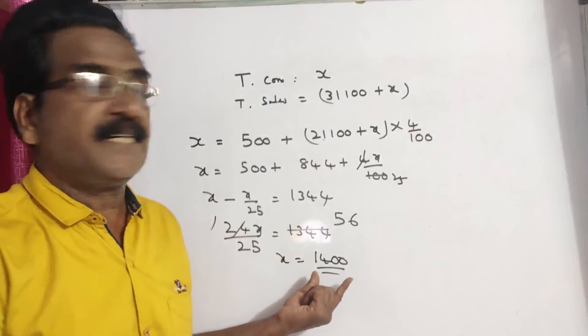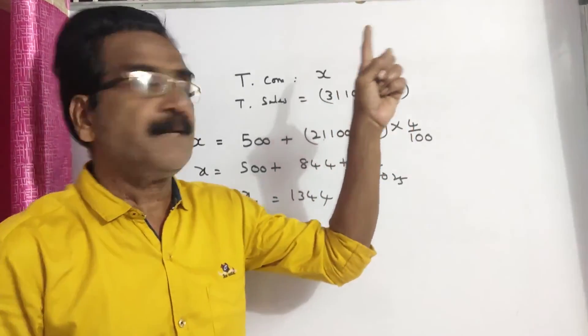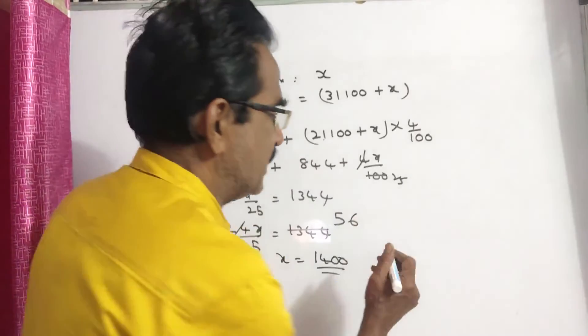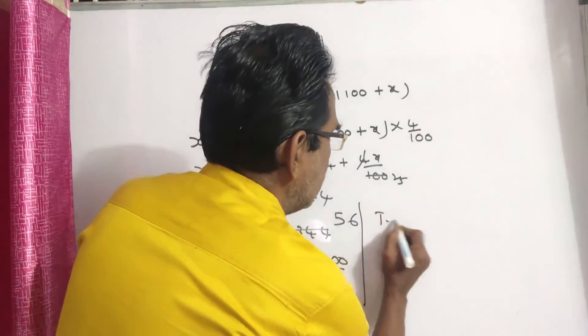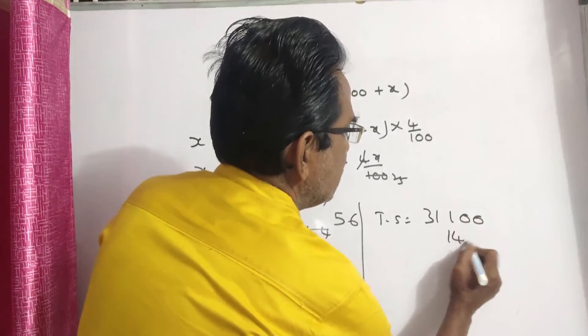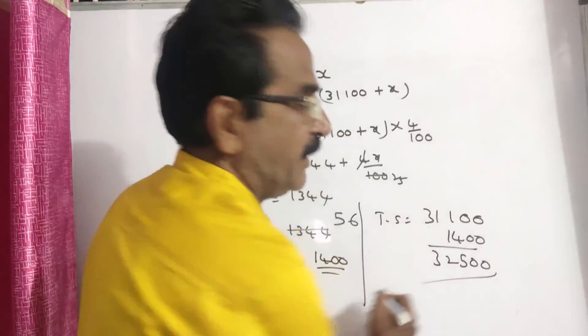his total commission is 14,100 and his total sales is 31,100 plus 14,100. 32,500 is total sales. Total sales is equal to 31,100 plus 1,400 that comes to 32,500.